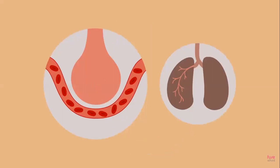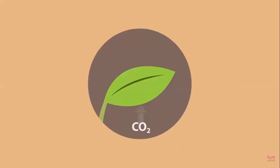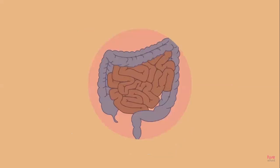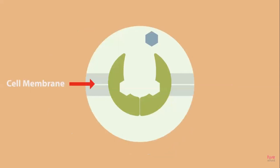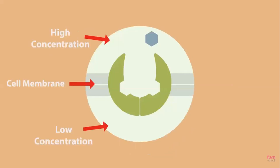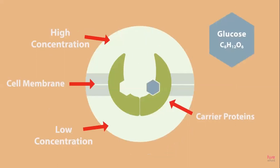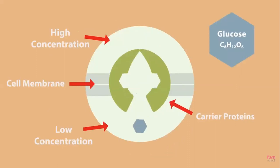Carbon dioxide moving from the air into the leaves of plants also moves by diffusion. How digested foods like amino acids move from the small intestine into the blood also moves by diffusion. You can also have facilitated diffusion, where the movement is still down the concentration gradient but special carrier proteins are required. Glucose and ions need carrier proteins to move across the membrane.